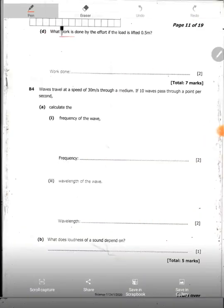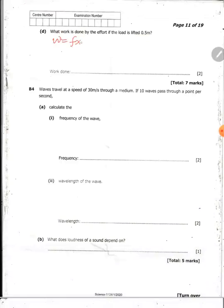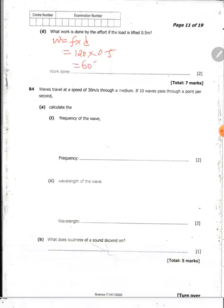D says, find what work is done by the effort if the load is lifted through 0.5. Now we know that work done is equal to force times distance. The load is one which has moved the distance. So I'm going to use 120 times 0.5. So I'm saying 120 times 0.5. That should give you 60 joules or 60 newtons per meter.